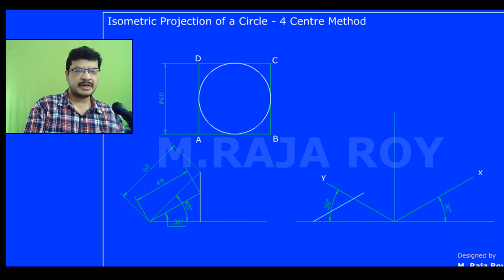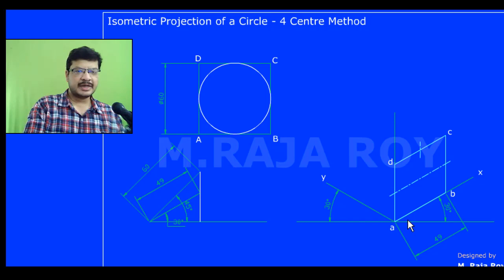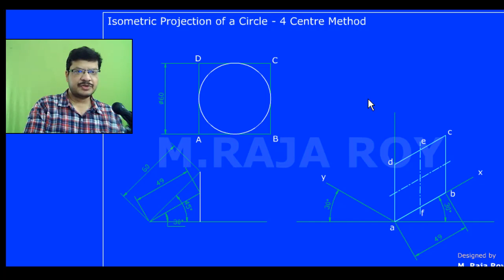Now take the isometric length along the X axis and the Z axis. AB is parallel to Z axis, BC is parallel to Z axis, CD is parallel to X axis, AD is again along the Z axis. Now the parallelogram is completed. The midpoint of CD is E and the midpoint of AB is F.